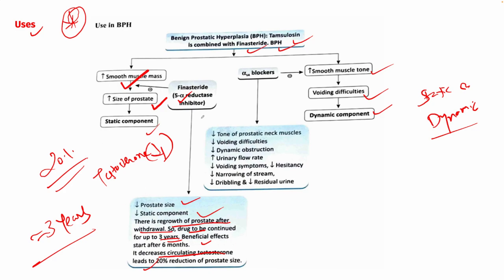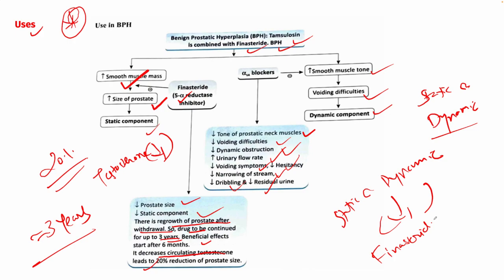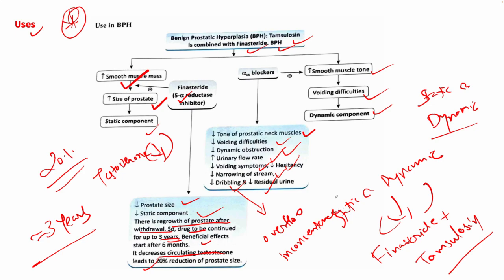Tamsulosin, as an alpha-1 blocker antagonist, decreases the tone of prostatic neck muscles, decreases voiding difficulties, and decreases dynamic obstruction — hence increasing urinary flow rate, increasing voiding substance, and decreasing narrowing of the urethral lumen. Dribbling (overflow incontinence) and residual urine left in the bladder are also decreased. Overall, the static and dynamic components of BPH are reduced with the finasteride and tamsulosin combination.